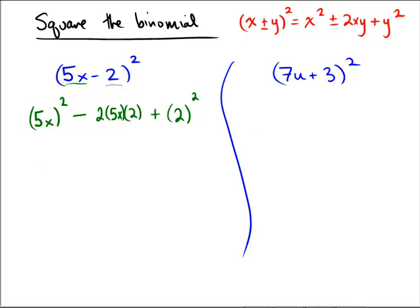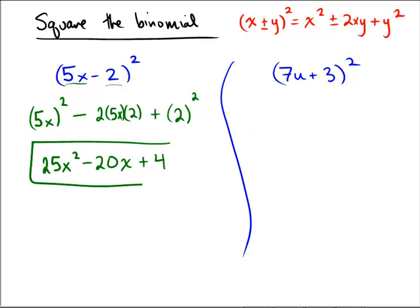The final answer to this problem would be 5x times 5x is 25x squared. Here we have a 2 and a 2 and a 5, so 2 times 5 is 10 times another 2 is 20. So we've got minus 20x. And then 2 times 2, or 2 squared, is of course 4. So the final answer here is 25x squared minus 20x plus 4.